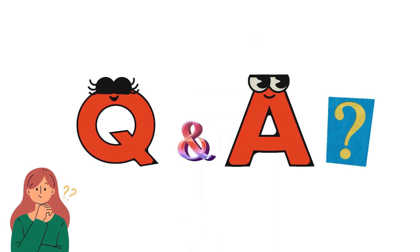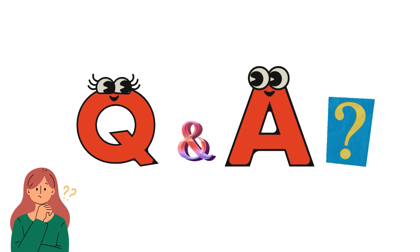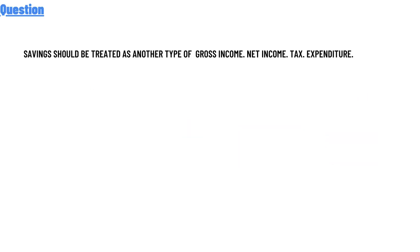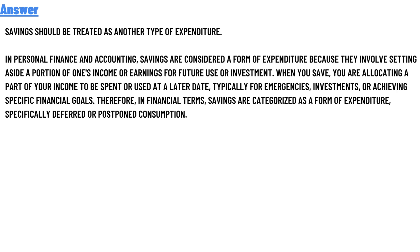So our today's question is: should saving be treated as other types of gross income and net income? The correct answer is that saving should be treated as other types of expenditures.